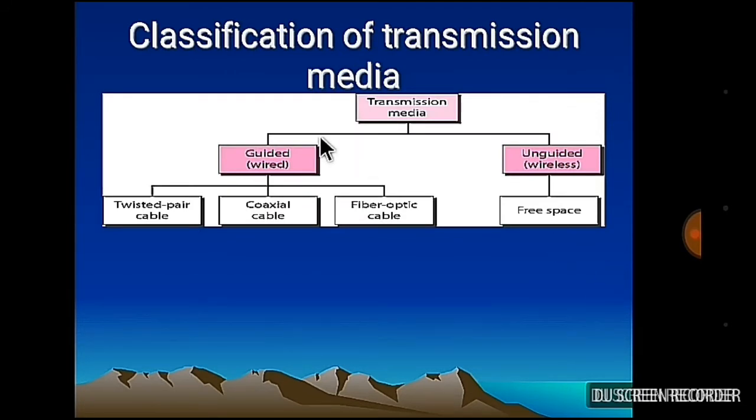Now comes to classification of transmission media. In transmission media, there are mainly two parts: one is guided or wired, another is unguided, means wireless. It travels in free air, for example mobile tower, TV station, radio station. In wired transmission media, there are three parts: first one is twisted pair, second one is coaxial cable, third one is optical fiber.